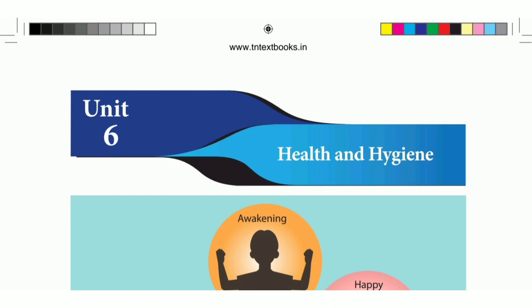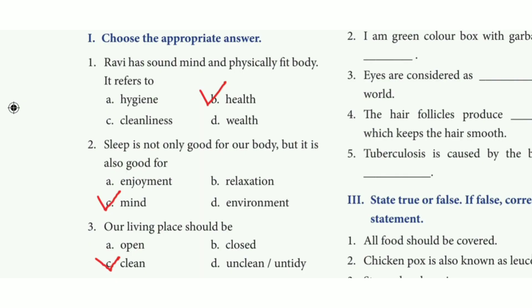7th standard science, term 1, lesson 6 book-back answers. Choose the correct answer. 1st one: Ravi has a sound mind and physically fit body. It refers to — the answer is option B, health.